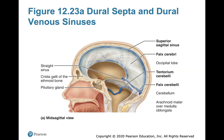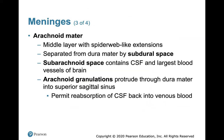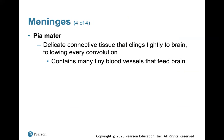The dural septa and dural venous sinuses refer to how blood is drained from the different parts of the brain — drained into these sinuses and then traveling down the neck back to the heart. The pia mater is the delicate connective tissue that clings tightly to every convolution and contour of the brain.